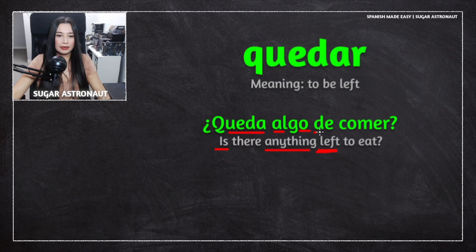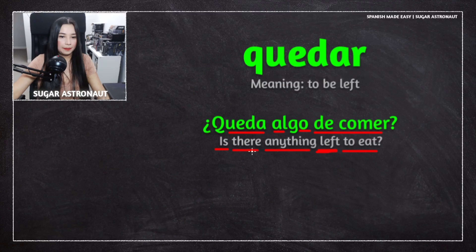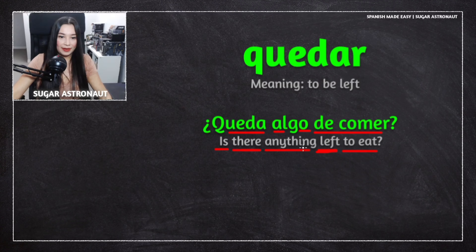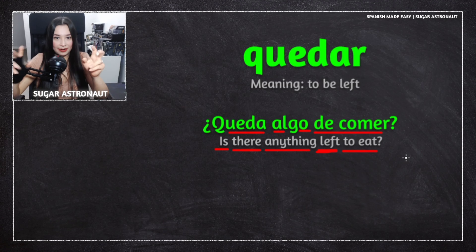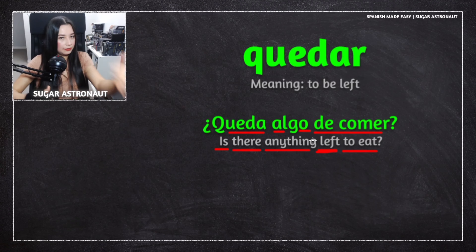'De comer' means 'to eat.' Since this is a question, in English you'd say 'Is there anything left to eat?' We don't need 'there is' in the Spanish version — it works differently from English.